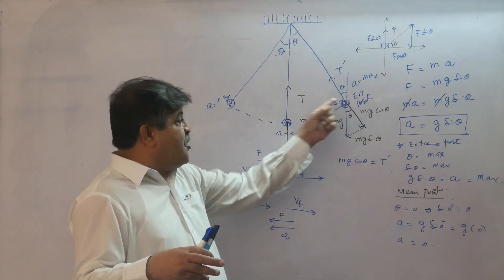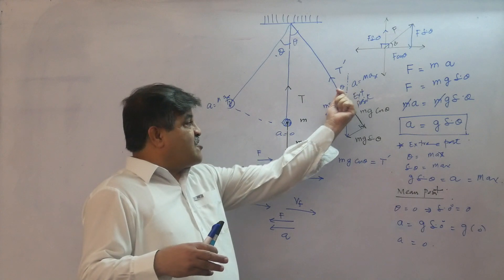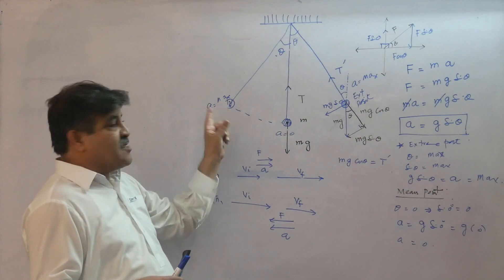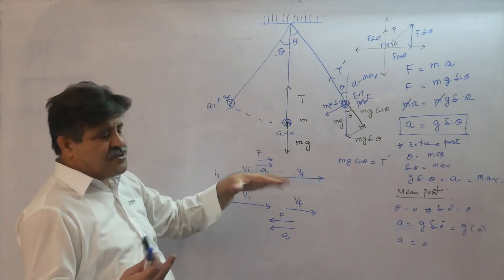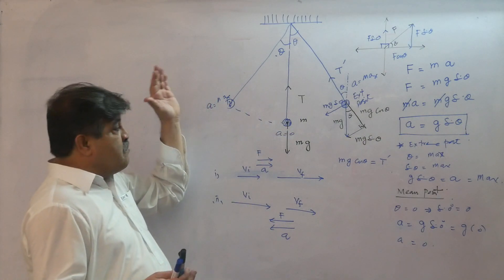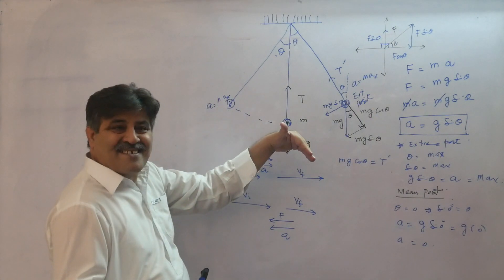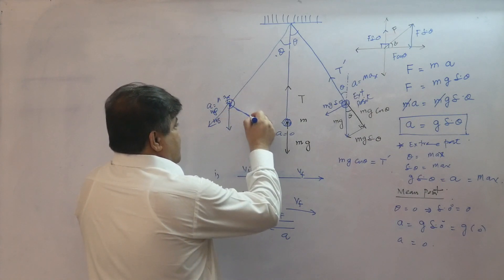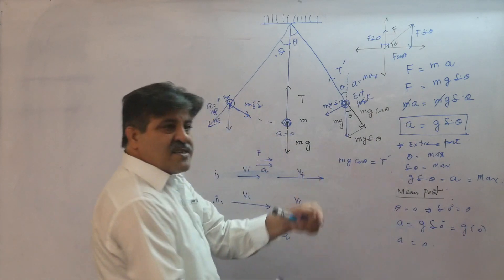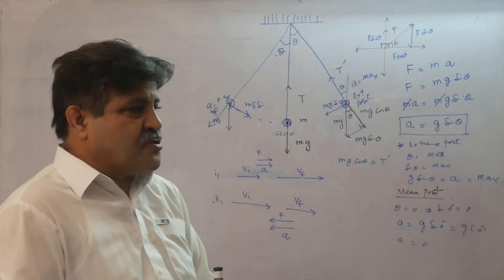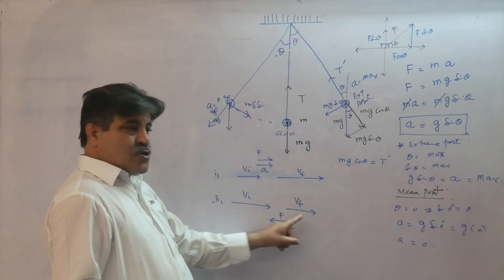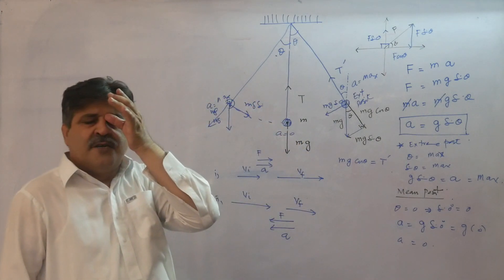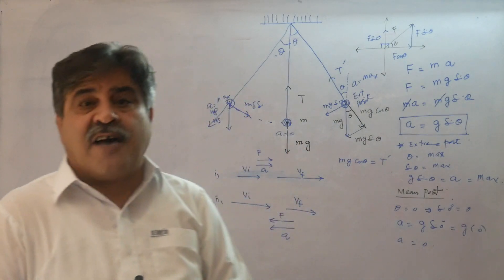From the extreme to the mean position, velocity is increasing so acceleration must be directed towards the mean position. From the mean position to the other extreme, velocity is decreasing - acceleration is increasing because mg sinθ acts as a braking force on the pendulum, retarding its velocity. The force is opposite to the direction of motion, so deceleration is directed towards the mean position. In this way we can show that acceleration is always towards the mean position.